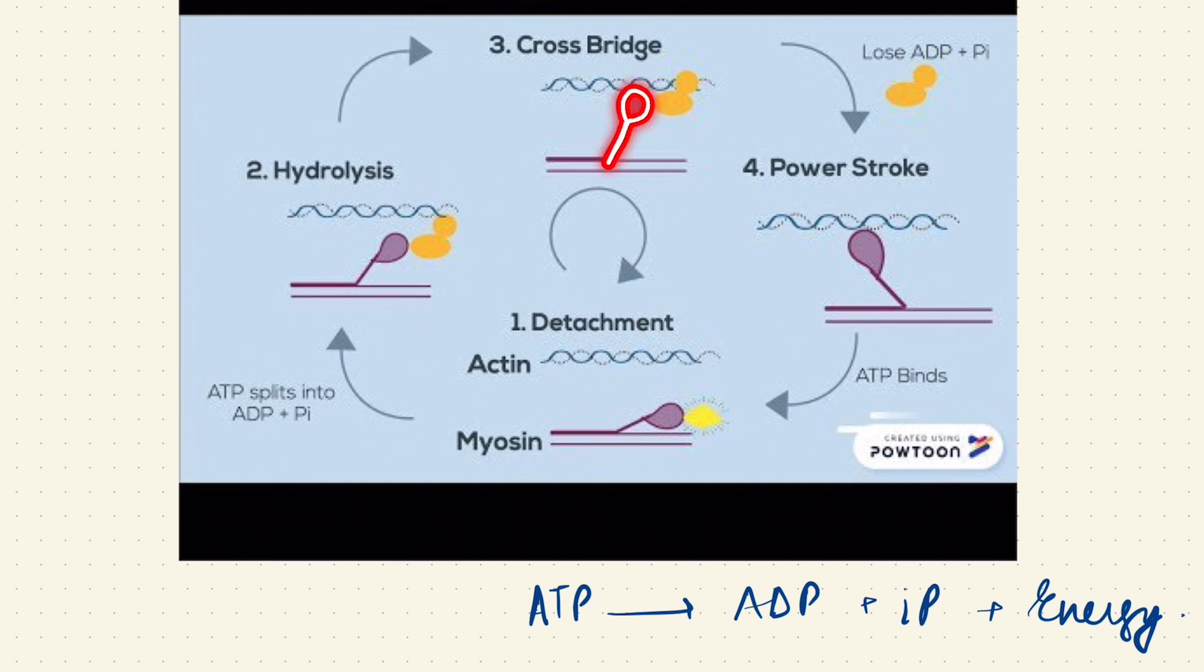With this hydrolysis of ATP, the energy that is released is utilized to form a cross bridge between the myosin and the actin. And the cross bridge is formed between the actin binding site on the myosin and the active site of actin. So here a cross bridge is formed. Now once this cross bridge is formed, ADP and inorganic phosphate are released out.